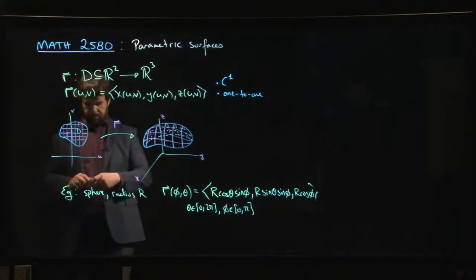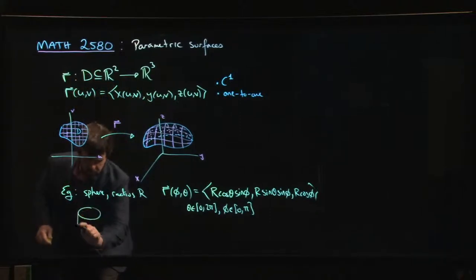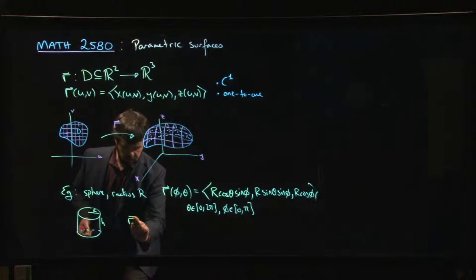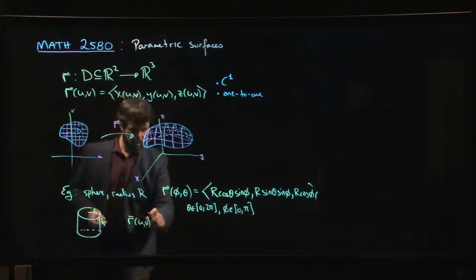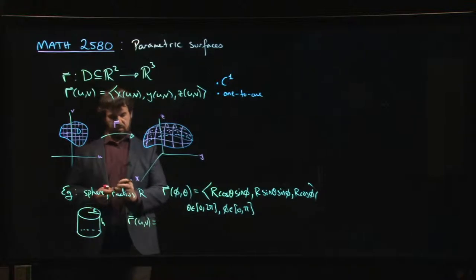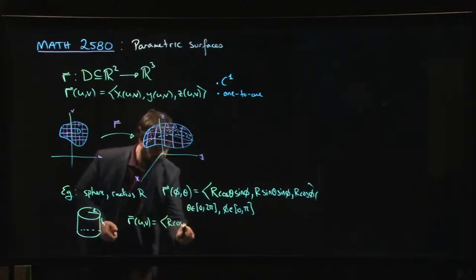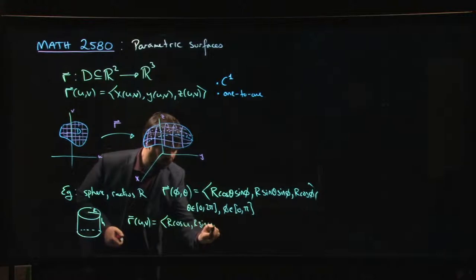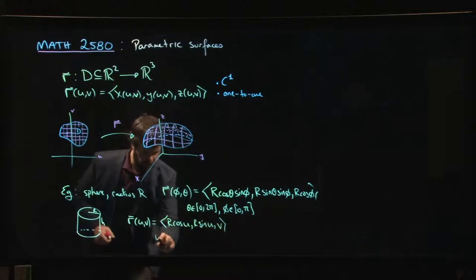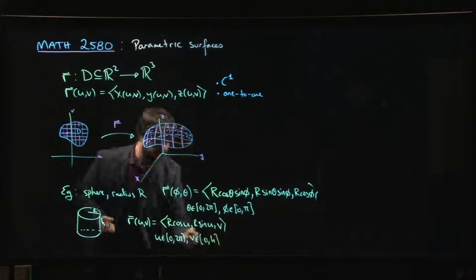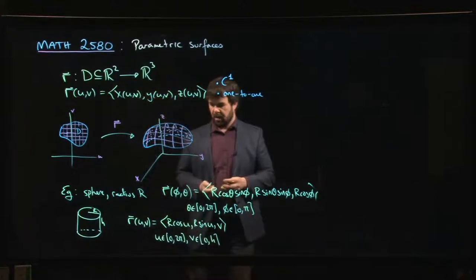Similarly we might do a cylinder. If we had a cylinder with radius r, height h, then we might do r(u,v) = (r cos(u), r sin(u), v), where u is between 0 and 2π and v goes between 0 to h. That might give us a parametrization for a cylinder.